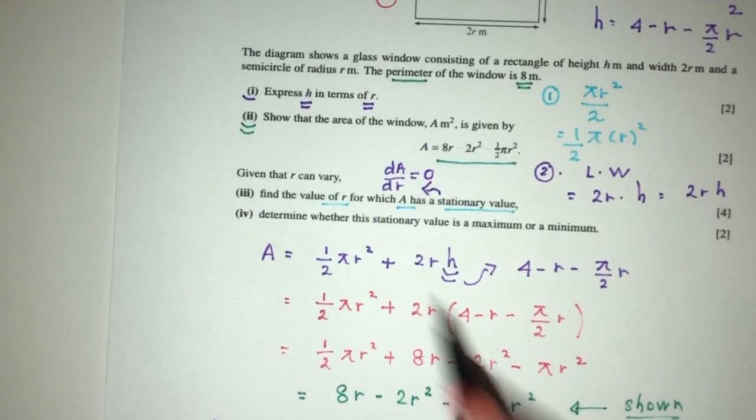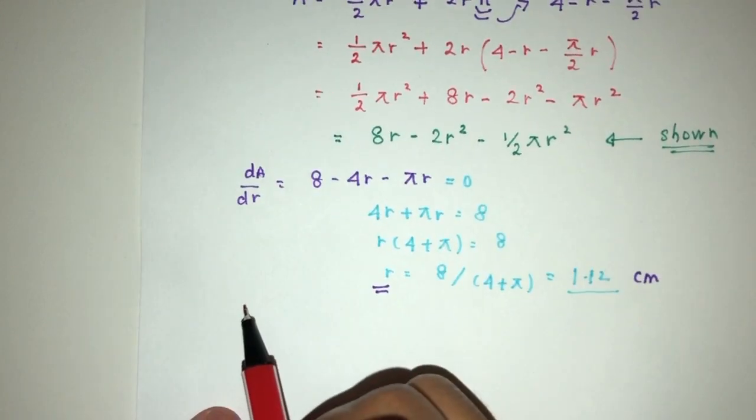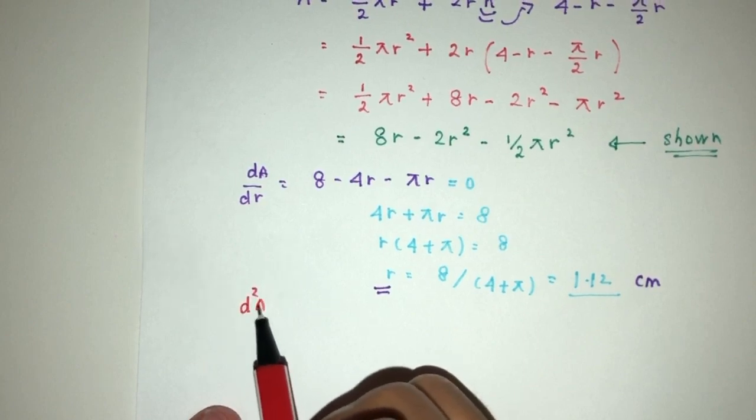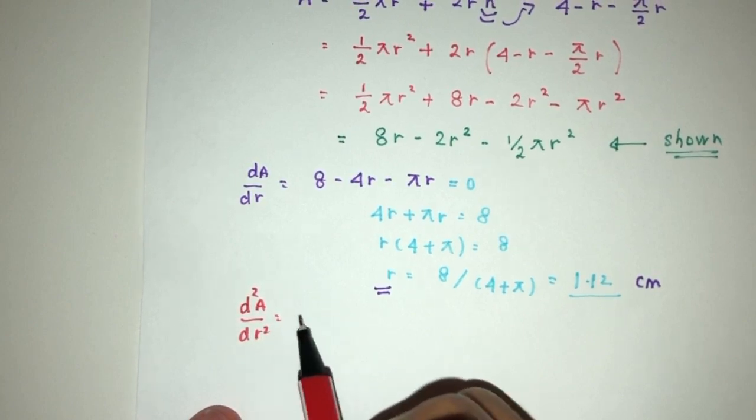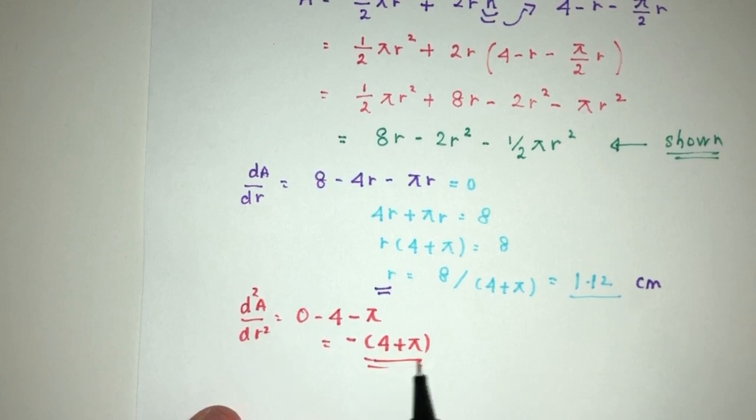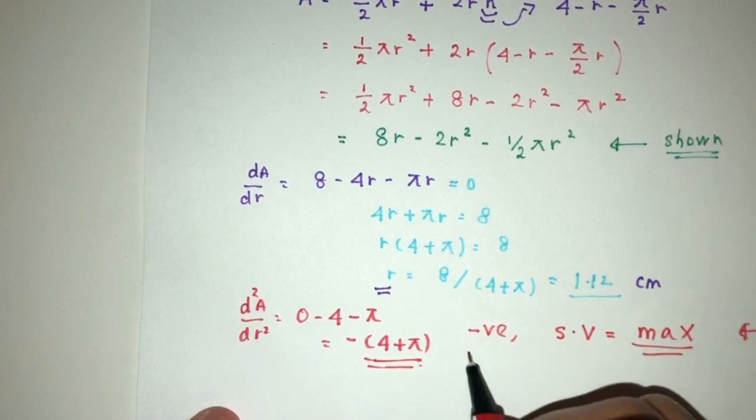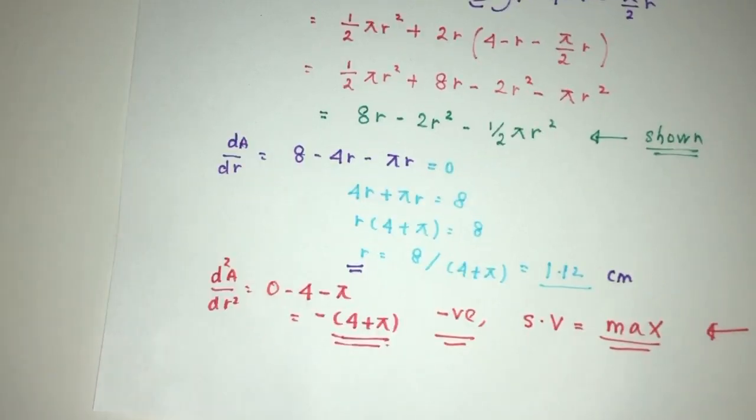Now, following up, we have to find the nature of this stationary value. So we have to differentiate one more time. d²A by dr², that should be 0 minus 4 minus π. As you can see, that will be a negative value. So because it is a negative value, we conclude the stationary value will be a maximum value. So that's your reasoning. Because it is a negative value, it will be a maximum value. And that will be your question in relation to differentiation.